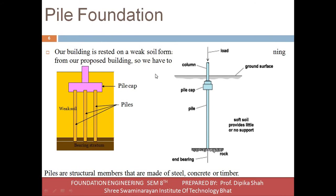This is the ground surface. Below the ground surface, the pile is driven. A pile cap is provided at the top. Below is the weak soil, and beneath that is the bearing stratum. This figure shows the basic function of the pile foundation.